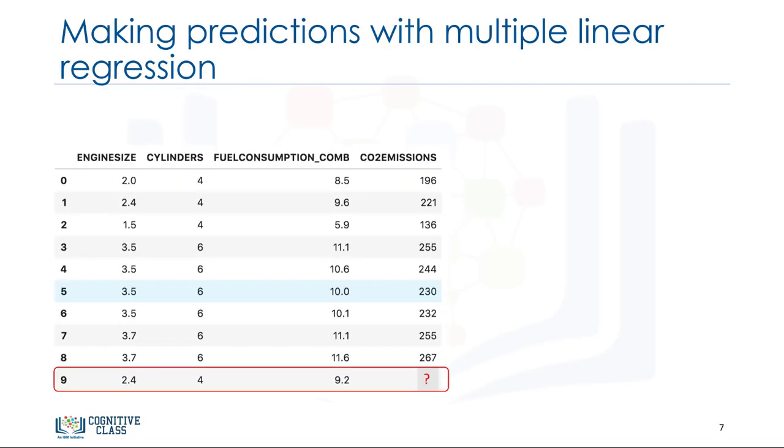After we found the parameters of the linear equation, making predictions is as simple as solving the equation for a specific set of inputs. Imagine we are predicting CO2 emission, or y, from other variables for the automobile in record number 9. Our linear regression model representation for this problem would be y hat equals theta transposed x. Once we find the parameters, we can plug them into the equation of the linear model.